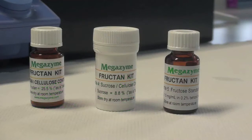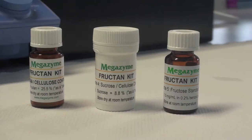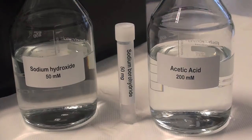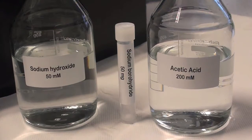Use the contents of bottle 3 fructan control flour, bottle 4 sucrose control flour, and bottle 5 fructan standard solution as supplied. Prepare sodium maleate buffer and sodium acetate buffer as described in the booklet. The sodium hydroxide and acetic acid solutions are prepared according to the instructions in the booklet.